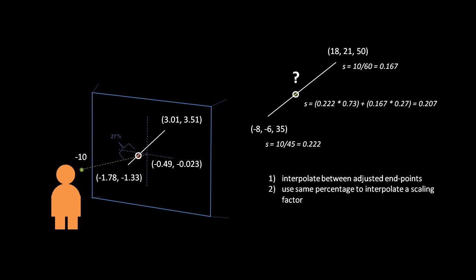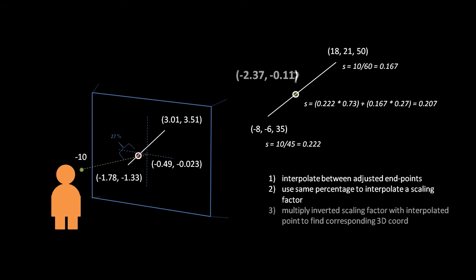With that alpha value, we interpolate between the scaling factors to get 0.207. We then get the X and Y of the corresponding 3D coordinate by multiplying the viewplane coordinates — negative 0.49, negative 0.023 — by the inversion of 0.207, which gets us negative 2.37, negative 0.11. To get the Z coordinate, we simply divide the scaling factor by the viewplane distance, and then subtract the viewplane distance, yielding in this case approximately 38.3.